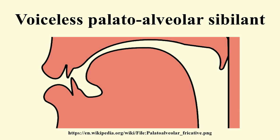The voiceless palato-alveolar sibilant fricative, or voiceless domed post-alveolar sibilant fricative, is a type of consonantal sound used in many spoken languages, including English. In English, it is usually represented in writing with 'sh', as in 'ship'. The symbol in the International Phonetic Alphabet that represents this sound is the letter ʃ, introduced by Isaac Pitman. The equivalent X-SAMPA symbol is S. An alternative symbol is š, an S with a háček.